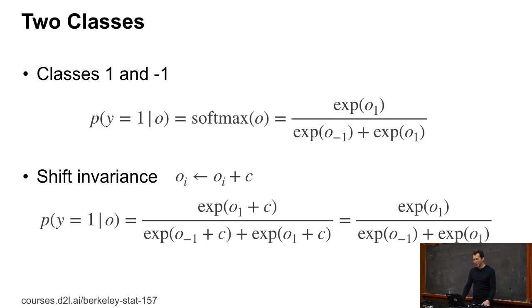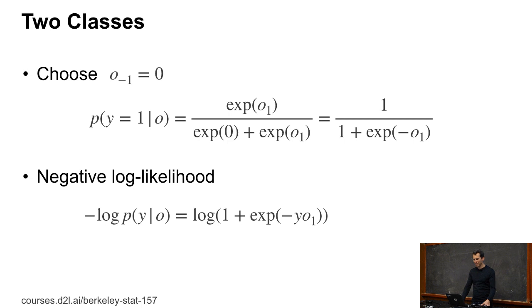Now, this is good if I have that because I can actually go and maybe simplify things. So what I could do is I could set O_{-1} to be zero. Why would I do that? Well, why not, right? So I get P of Y equals one given O, e to the O_1 divided by e to the zero, so that's one, plus e to the O. Now I go and divide by e to the O and I get one over one plus e to the minus O. That's the logistic.